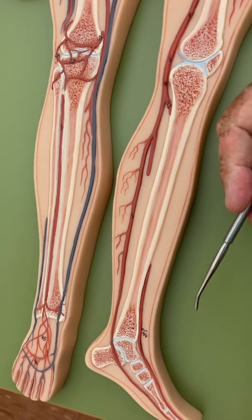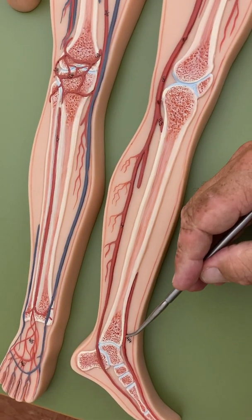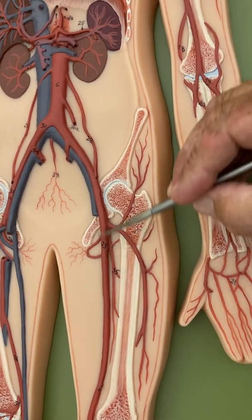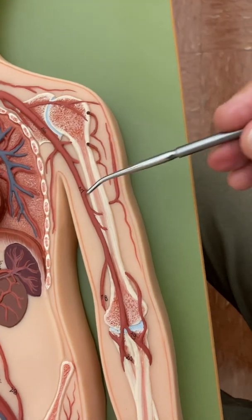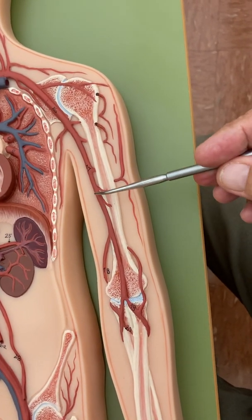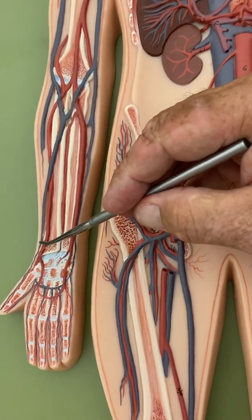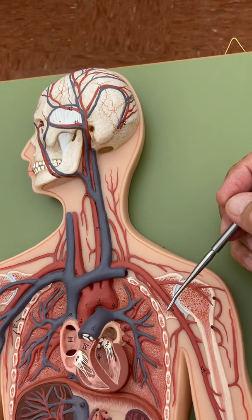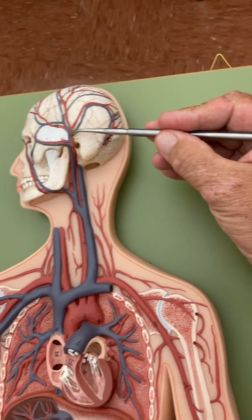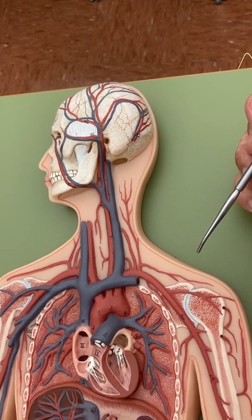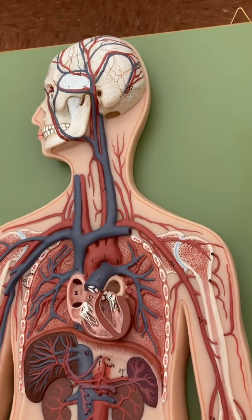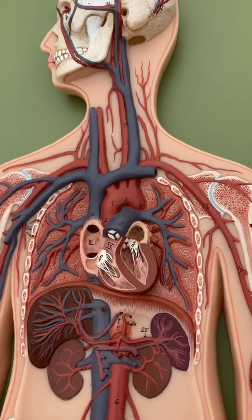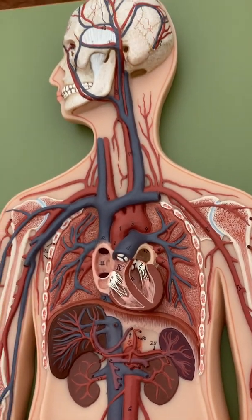To summarize pulse points: you can feel the dorsal pedal, popliteal behind the knee, and femoral in the groin area. For blood pressure we use the brachial artery. The radial artery in the wrist is easy to feel, and of course the best place is the common carotid in your neck. You might also feel a branch of the external carotid up on the head. That pretty much covers the arteries; the veins will be covered separately.